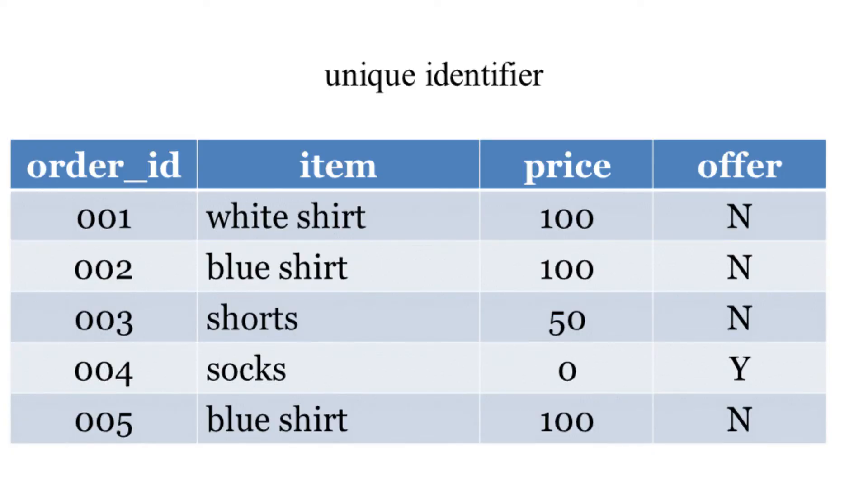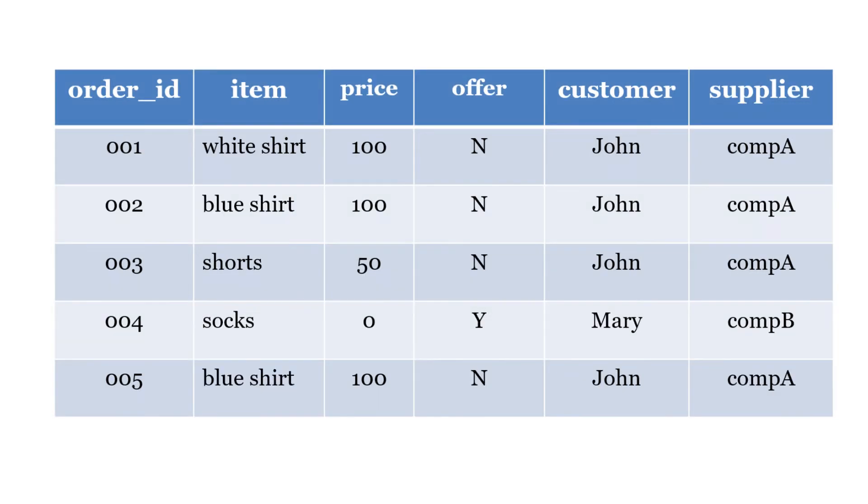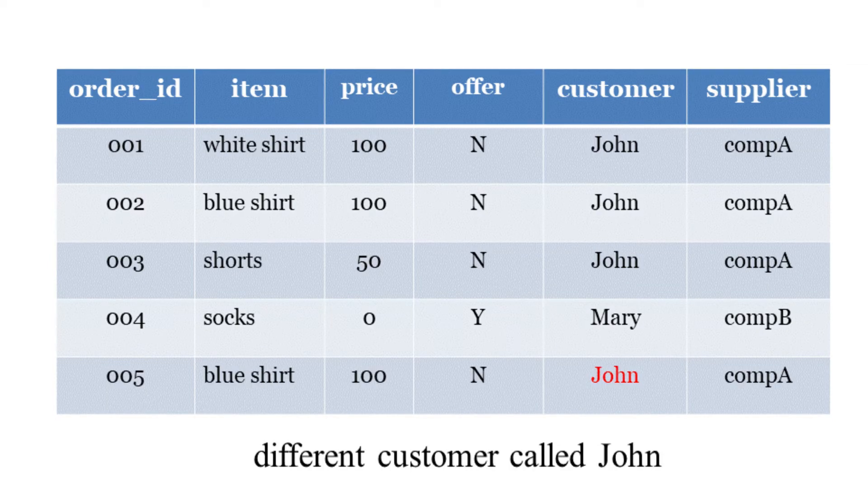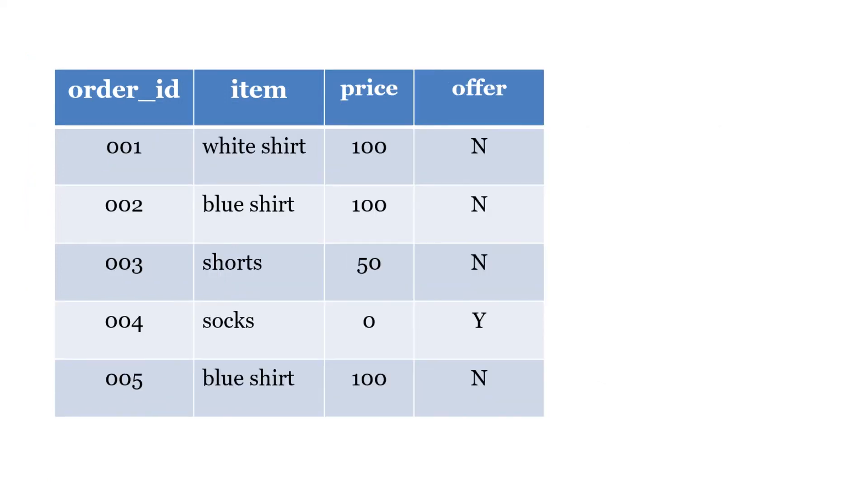We can add more details. We have order ID, item, price, offer, and we've added customer and supplier. Is there anything wrong with this table? What happens if we have a customer John that's a different customer from the first John? There are two different Johns. That's not correct. We don't know which customer it is, so we need a unique identifier for the customers. Now we have customer name and customer ID, so we can tell the difference between the two Johns. We also have a similar table for the seller, with seller name and seller ID.